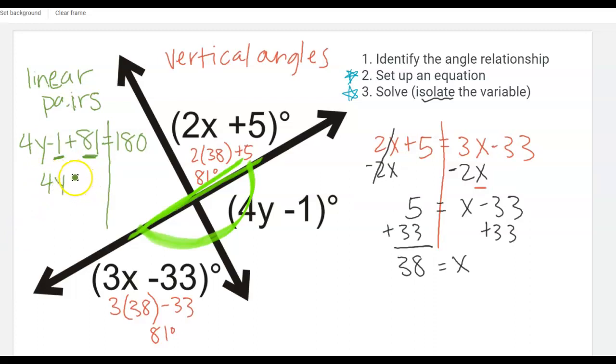Just makes the opportunity to make mistakes a little less frequent. So I have 4y plus 80 equals 180. And then I'm going to subtract. And I have 4y is equal to 100.